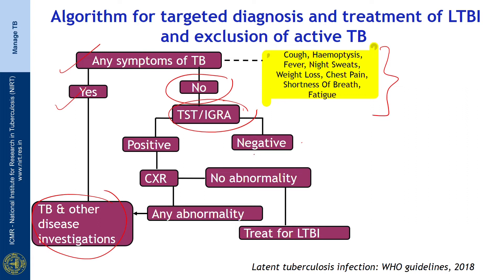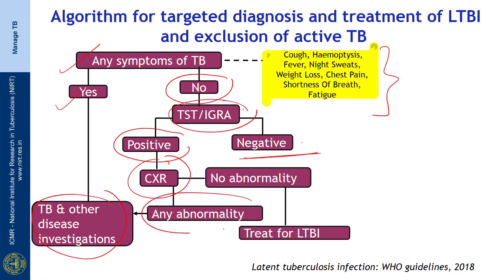If the TST or IGRA is negative, the algorithm ends. If the TST or IGRA is positive, a chest X-ray should be taken. In case of any abnormality, the patient should be evaluated for TB and other conditions. If there are no abnormalities, the patient should be treated for latent TB infection.